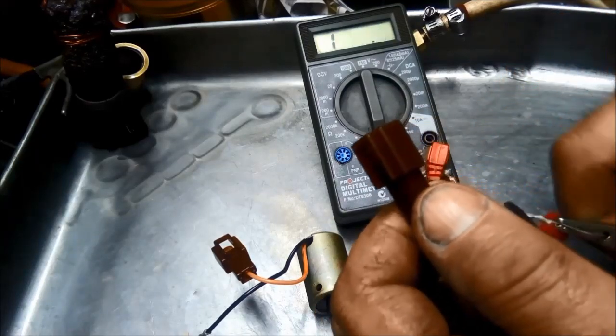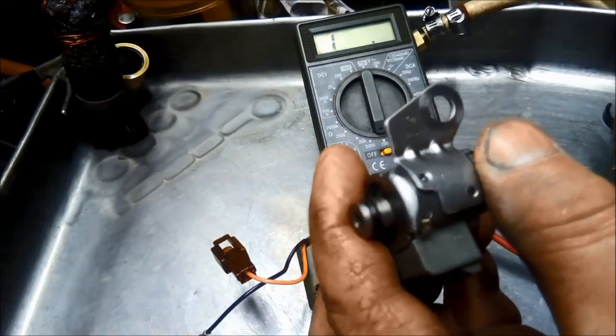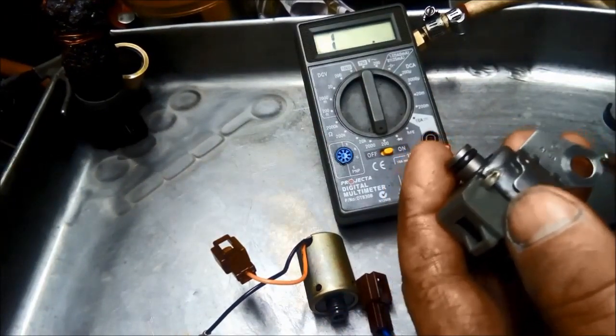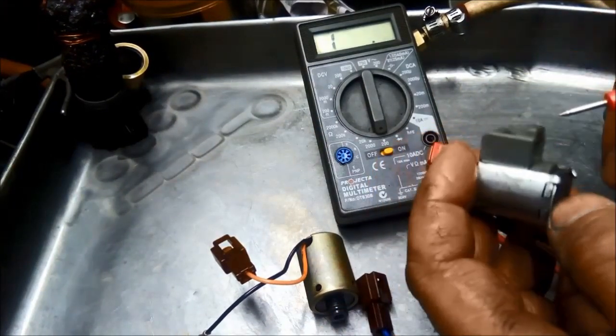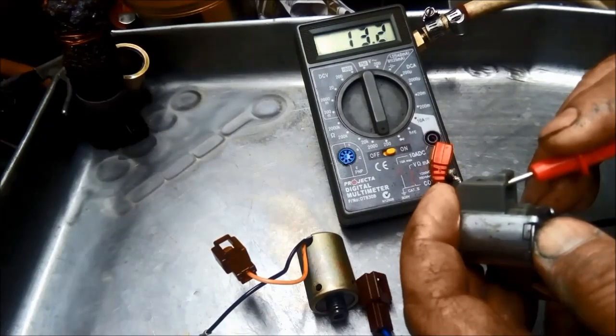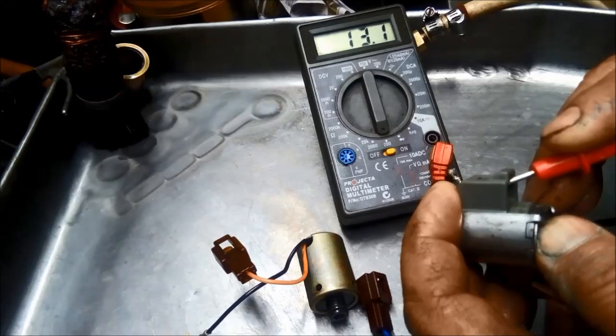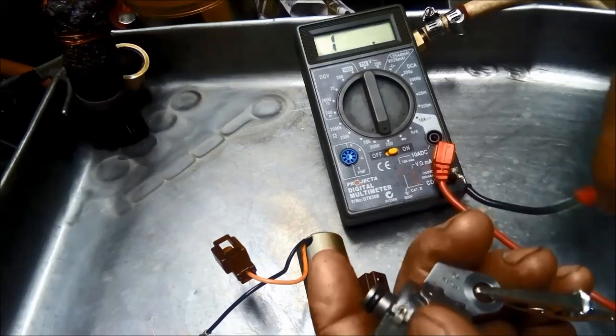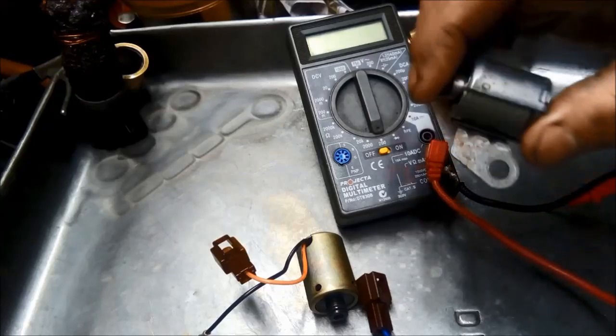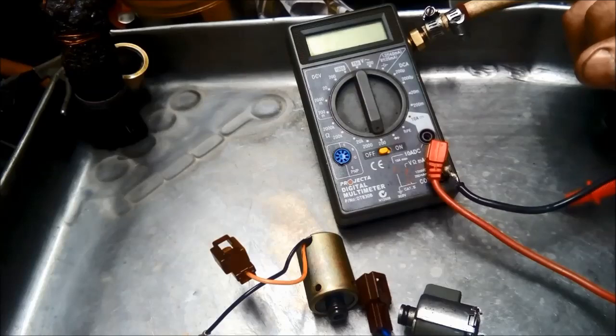We've also got this torque converter clutch solenoid—that's the genuine one, these other ones are aftermarket Rostra ones—and that one's 13.1 or 13 ohms. So that's the first check you should do: make sure the resistance is within the ranges.